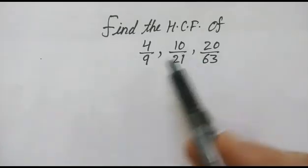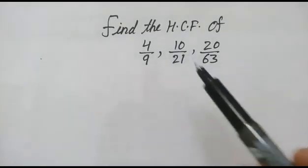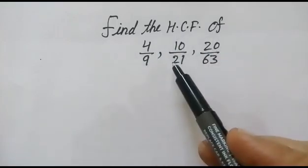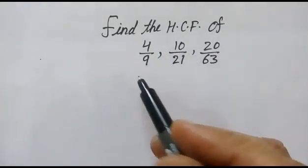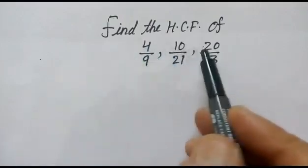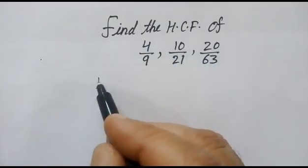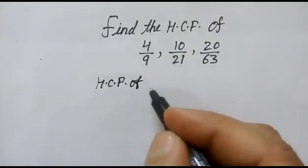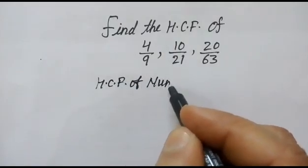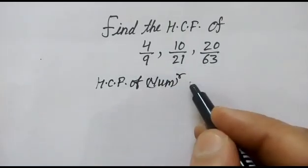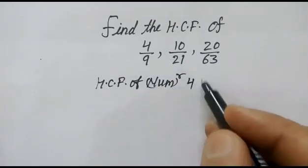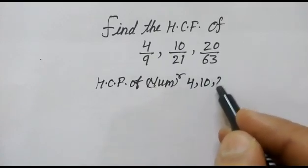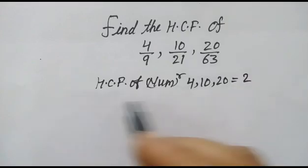In this problem we have to find out the HCF of fractions. First, we will find the HCF of the numerators — that is, the HCF of 4, 10, and 20 — which equals 2.